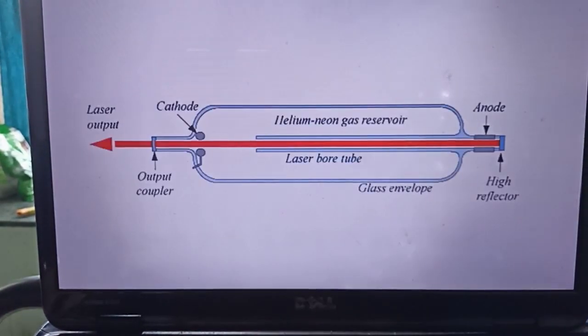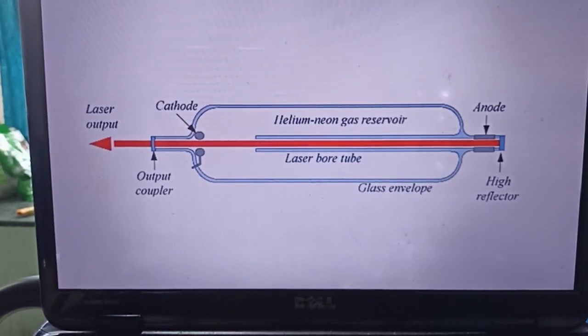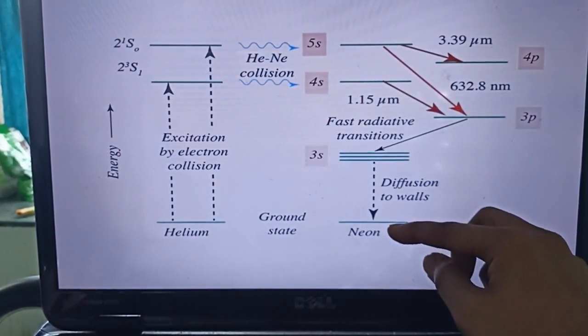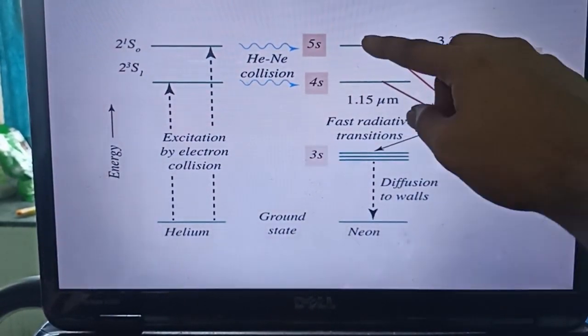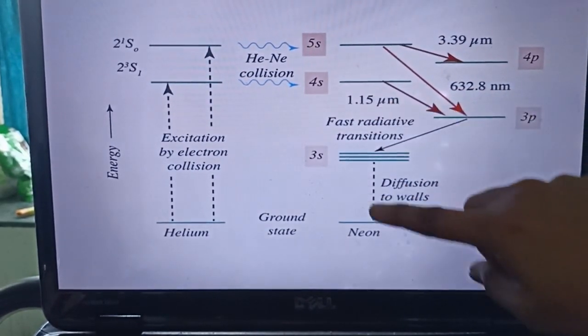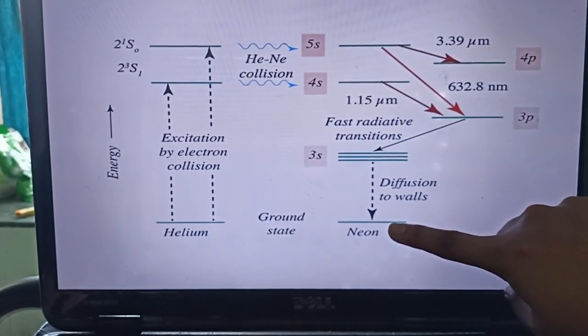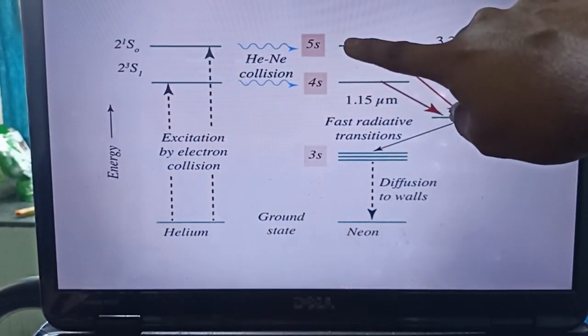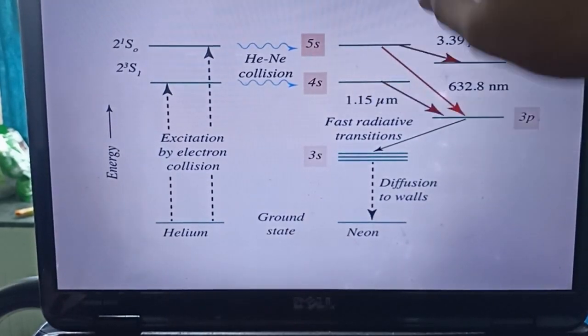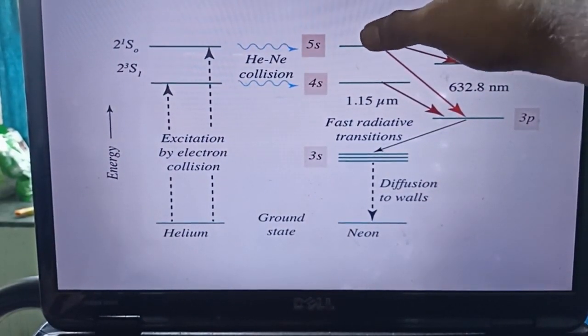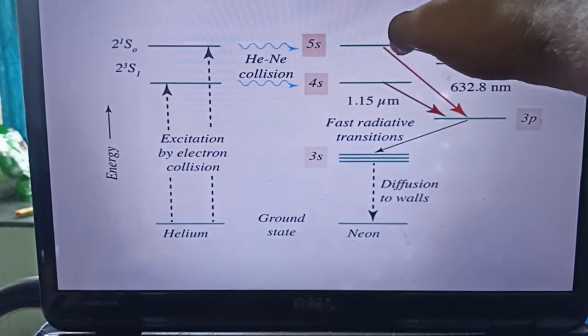Helium-Neon laser tube is a gas mixture of 10 parts Helium and 1 part Neon. The excited Helium atoms collide with the Neon atoms. When it collides with the Neon atom, the Neon atom is excited to two states of 5s and 4s. The Neon atom gets energized and goes to these two states of 5s and 4s. These are the metastable states, meaning that Neon atoms remain for a longer time in these energy levels.